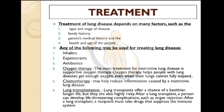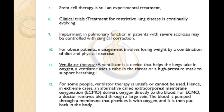After a lung transplant, a person can develop life-threatening complications such as organ rejection, and must take drugs that suppress the immune system. Next, stem cell therapy, which is still an experimental treatment. Clinical trials: treatment for restrictive lung diseases is continually evolving. Impairment in pulmonary function in patients with severe scoliosis may be controlled with surgical correction. For obese patients, management involves losing weight through a combination of diet and physical exercise. Ventilator therapy uses a device that helps the lungs take in oxygen via a tube in the throat or a high-pressure mask. ECMO — Extracorporeal Membrane Oxygenation — delivers oxygen directly to the blood by removing blood through a large vein, pumping it through an oxygenating membrane, and returning it to the body.